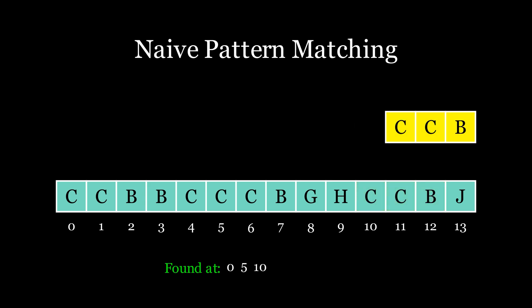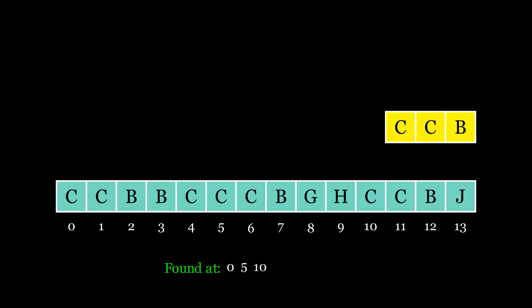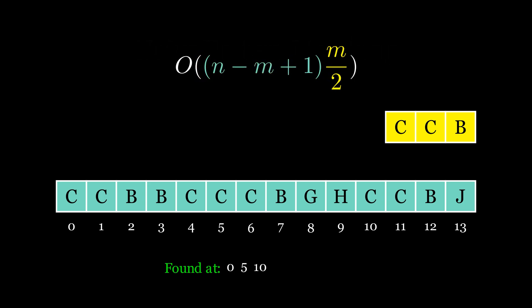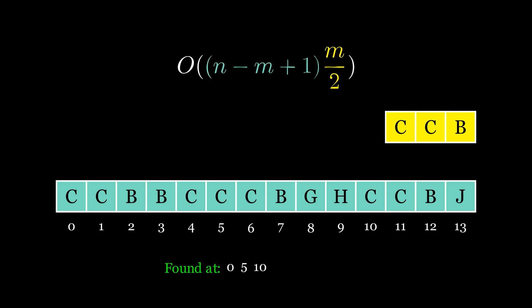In this naive approach, the pattern slides over the text n minus m plus 1 times, where n is the length of the text and m is the length of the pattern. In each pass, it compares on average half the length of the pattern, so the final time complexity will be O(n*m). The space complexity is constant, because the algorithm doesn't require any additional data structures beyond the pattern and the text themselves.